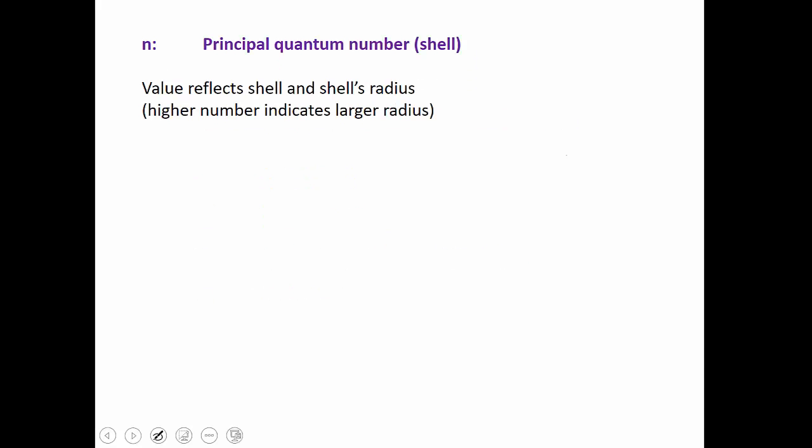Our first quantum number, the principal quantum number, is the most broad one — sometimes referred to as the shell or the level. Within our shell, it's similar to Bohr's energy levels in that each one, as you get farther out, has a larger radius and a higher energy. It's just that this is now three-dimensional. The value of N reflects the relative shell radius and energy, and we're allowed values of N equals 1 and up with whole numbers only.